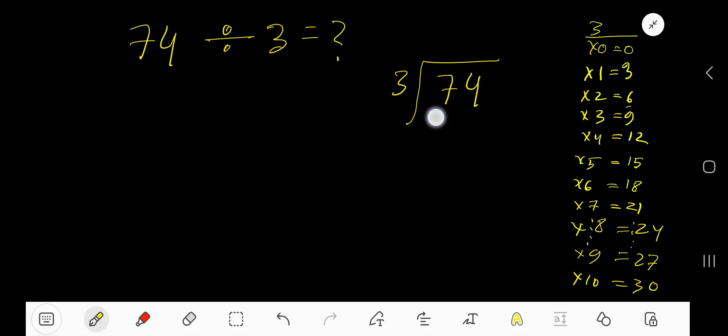3 goes into 7 how many times? 3 times 3 is 9, 2 times 6. 9 is greater, so we'll take 2 times. 2 times 3 is 6. Subtract, you are getting 1.